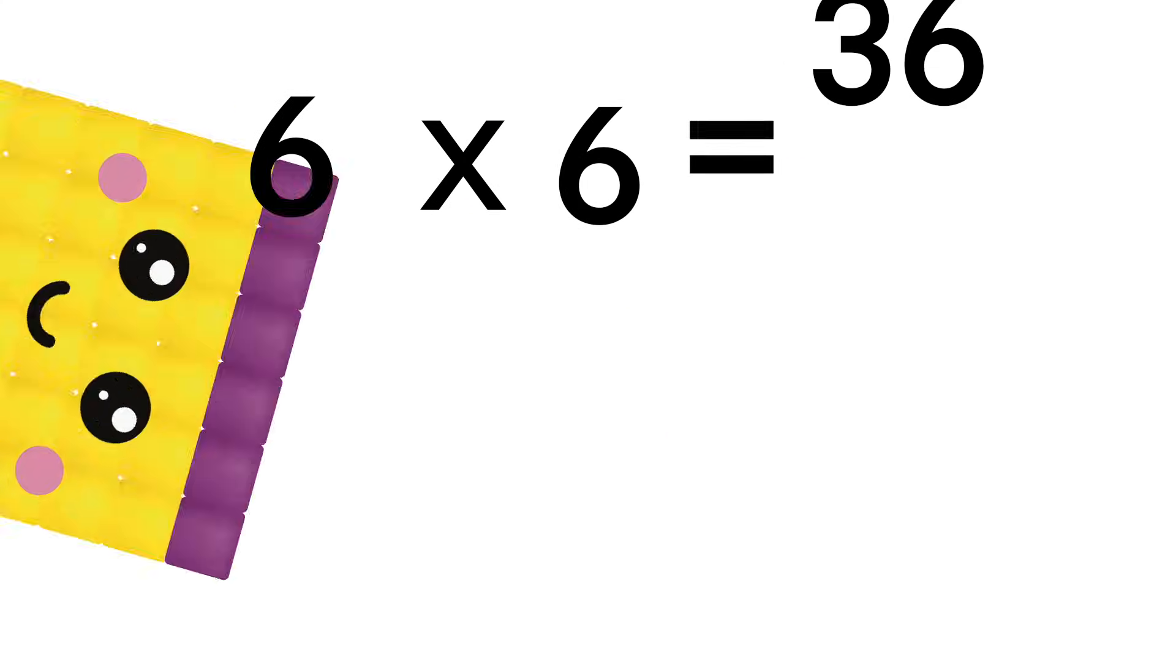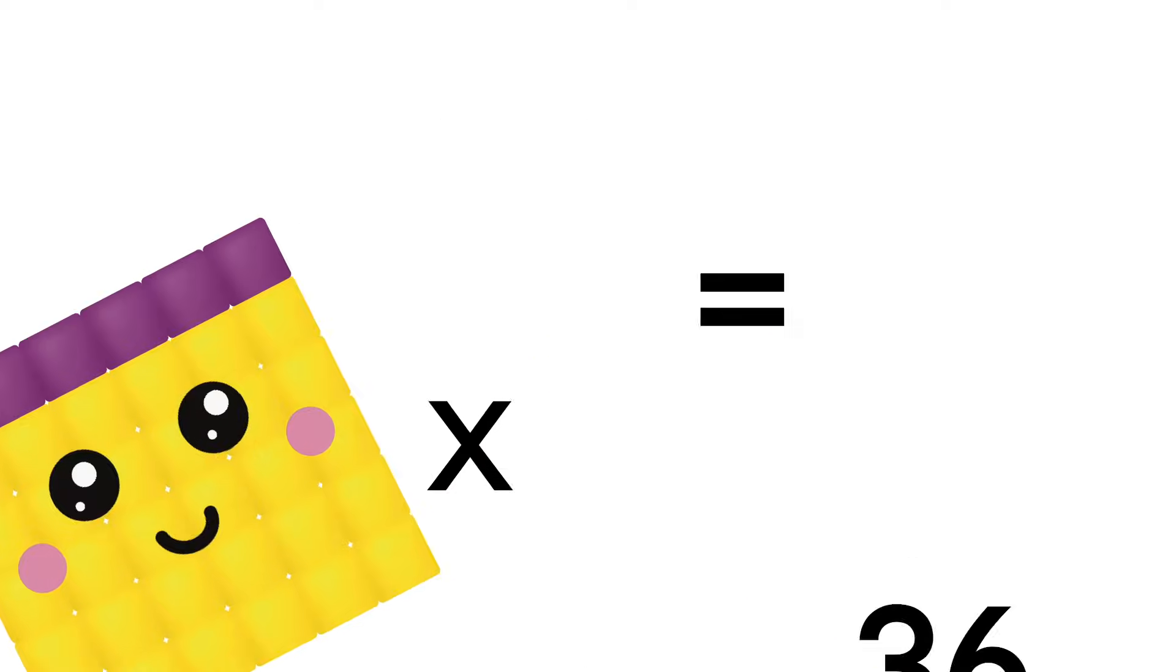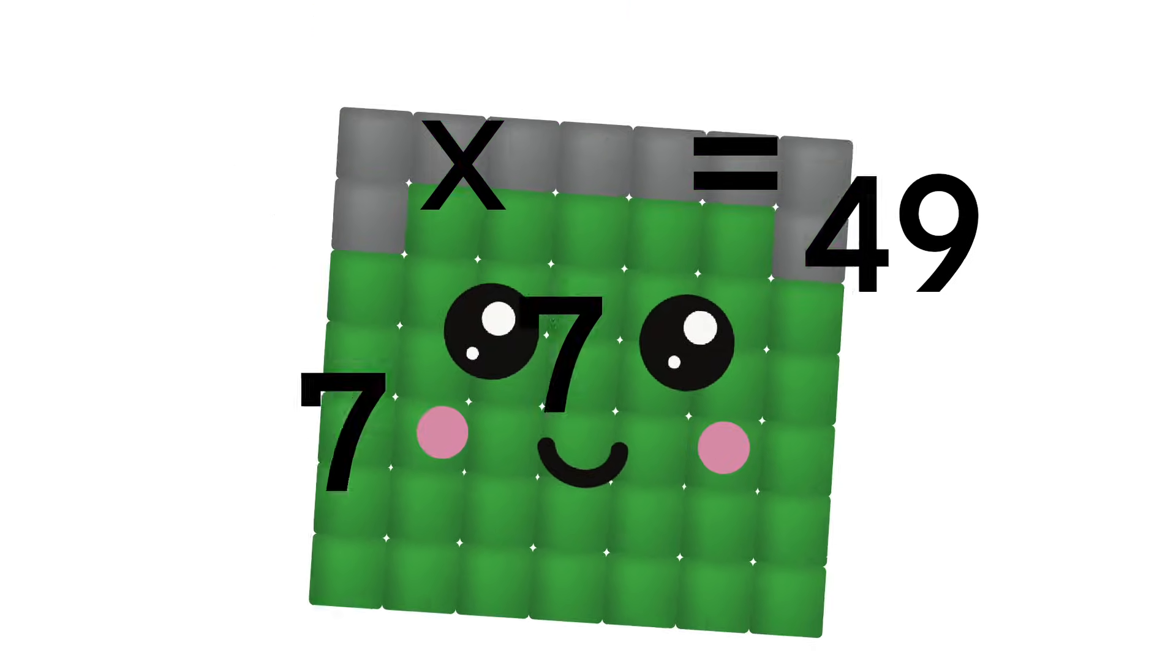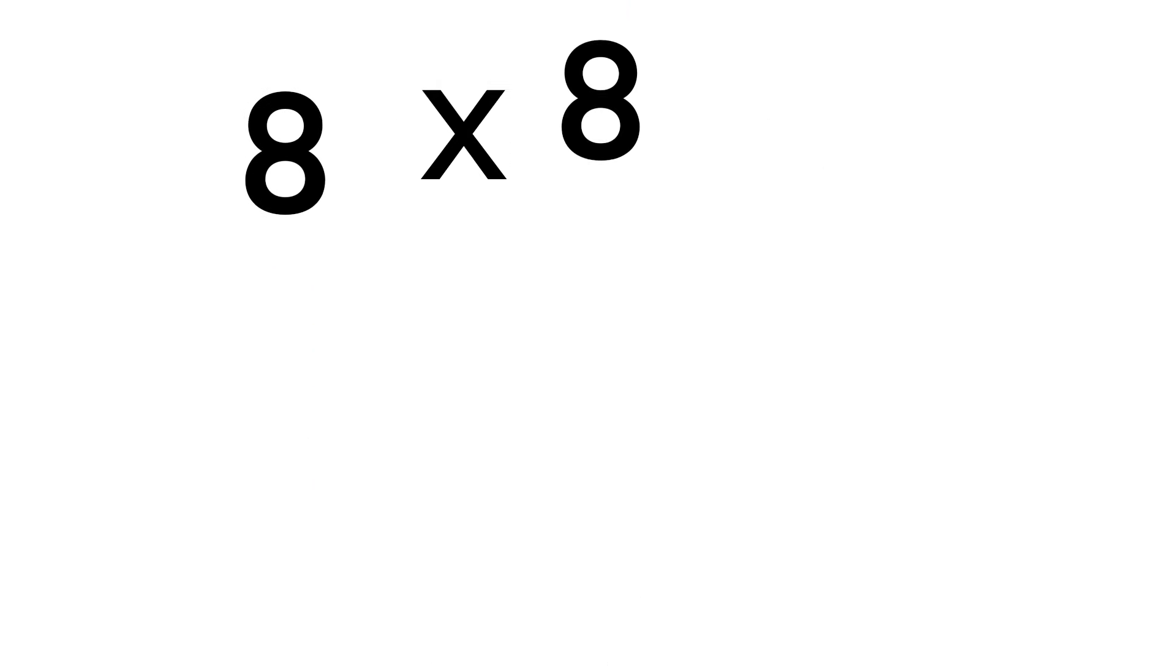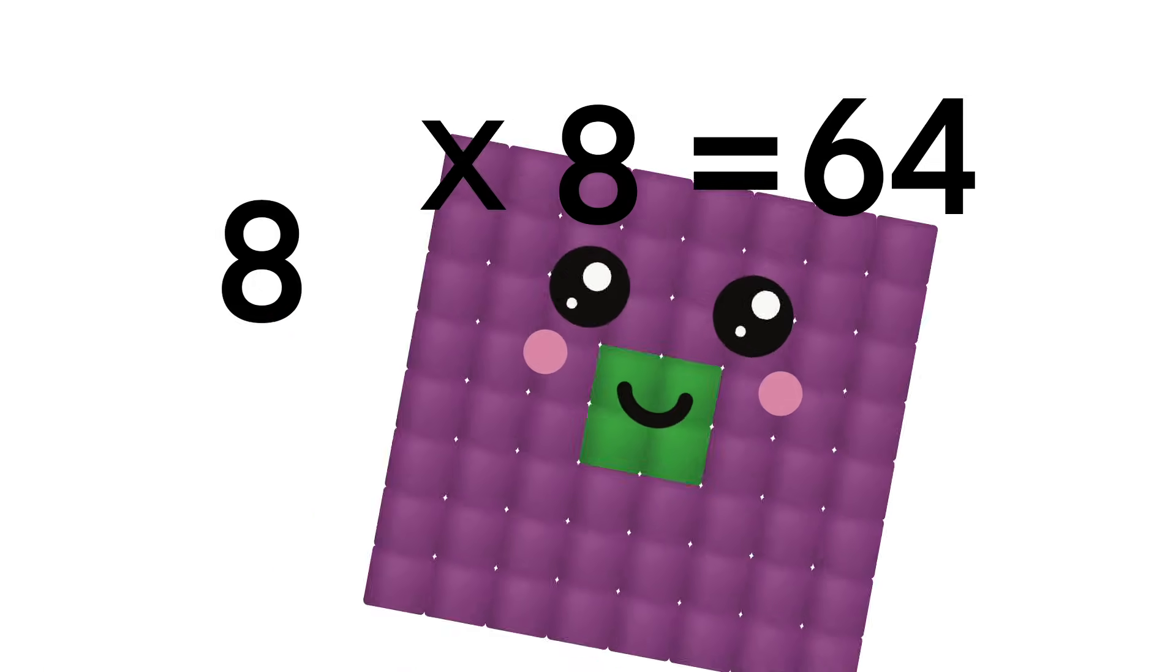6 times 6 equals 36, math is full of clever tricks. 7 times 7 equals 49, I love using this brain of mine. 8 times 8 equals 64, let's find some more.